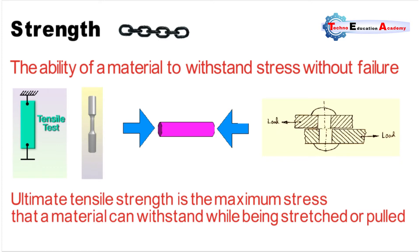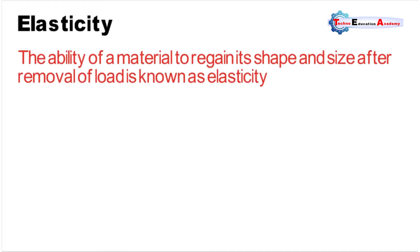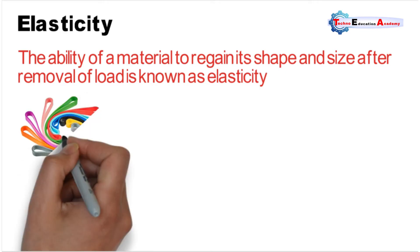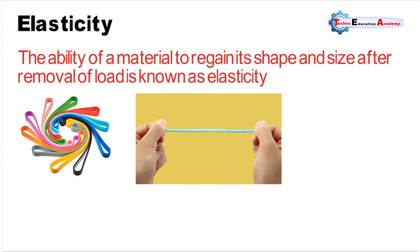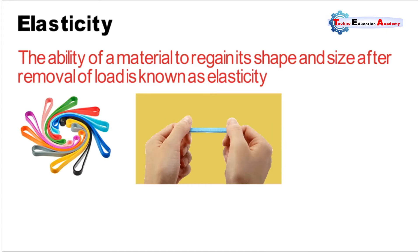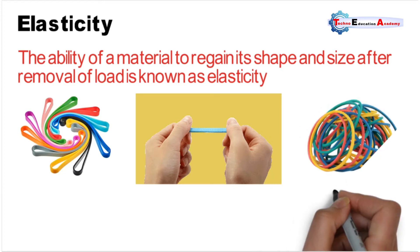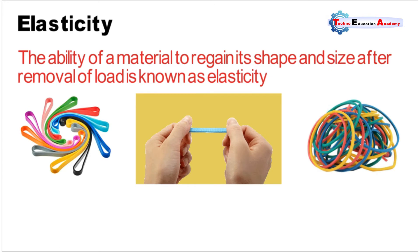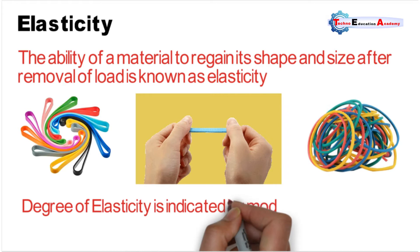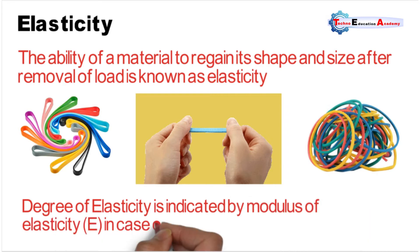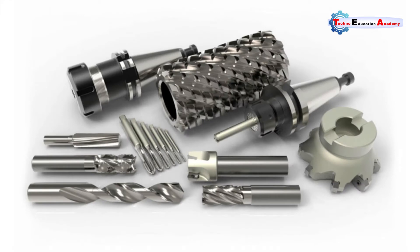The second property is elasticity. Elasticity is the ability of a material to regain its original shape and size after removal of the load. For example, rubber is an elastic material — when you pull it, it expands or changes length, and after removal of the force it regains its original shape and size. For each elastic body, a certain limit exists beyond which the material will hold a remaining deformation; this limit is known as the elastic limit. The degree of elasticity is indicated by the modulus of elasticity. This property is desirable for materials used in tools and machines.